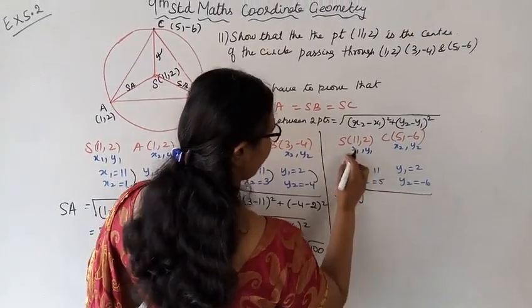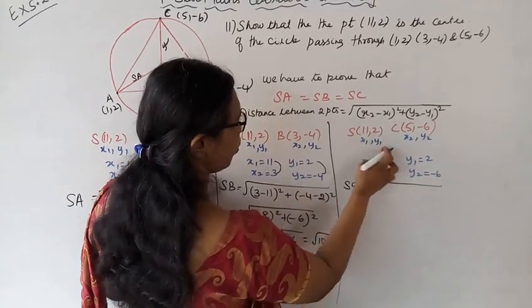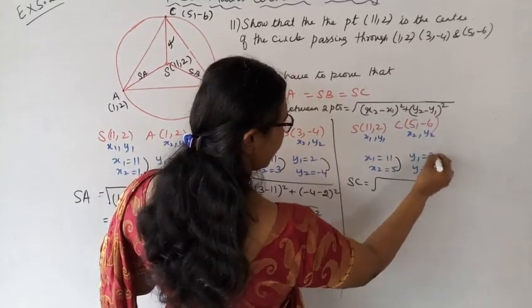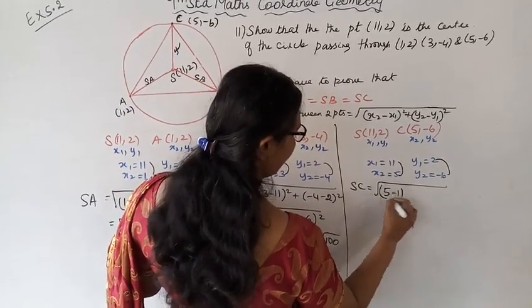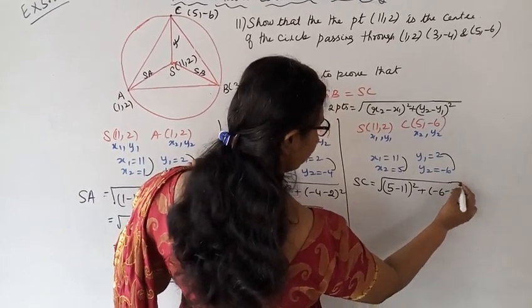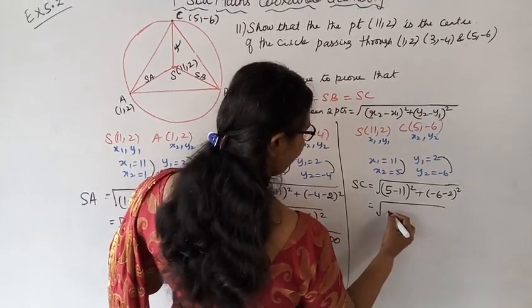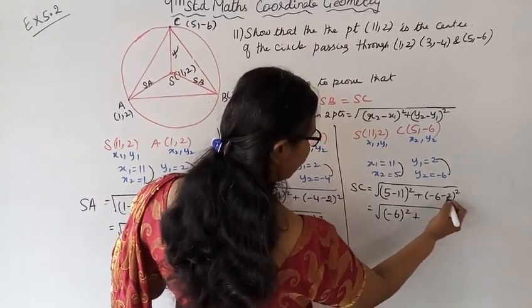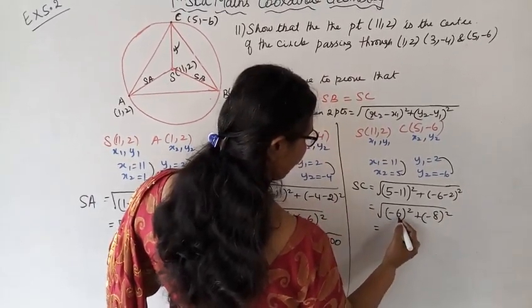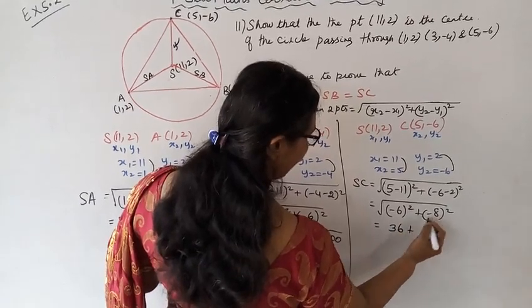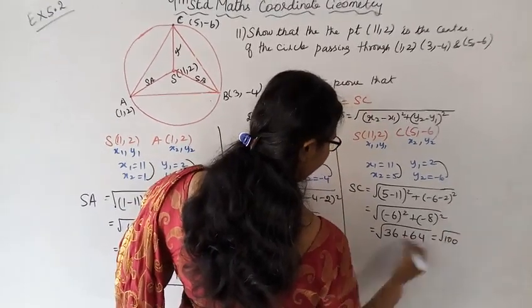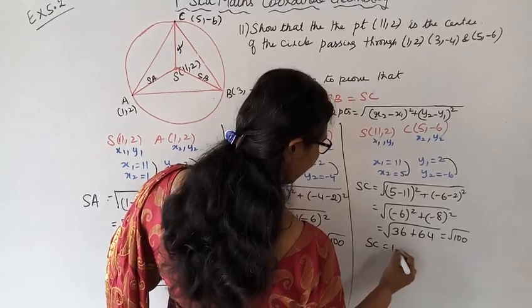Now SC: S is (11, 2) and C is (5, −6). So √((5−11)² + (−6−2)²) = √((−6)² + (−8)²) = √(36 + 64) = √100. Therefore SC = 10.